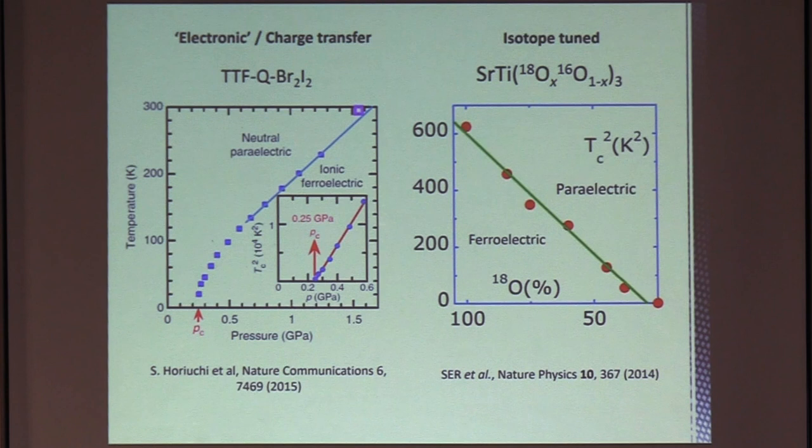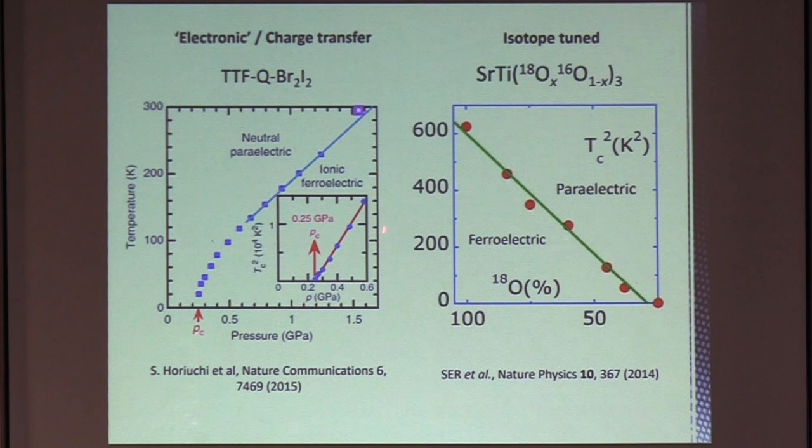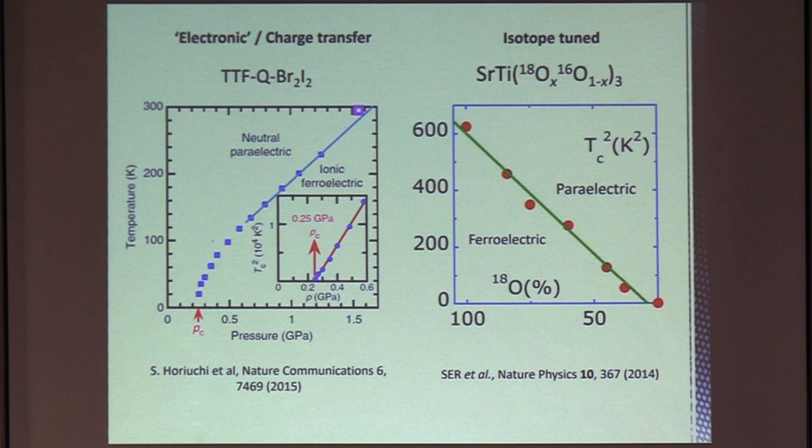So here's a completely different type of ferroelectric, a so-called electronic or charge transfer material. In the paraelectric phase, there are no ions, as it were. They're more like neutral atoms. Well, in the ferroelectric phase, electrons are transferred from one atom to another, producing ions. And that results in a ferroelectric state here. That can also be tuned to a quantum phase transition with pressure in this case.